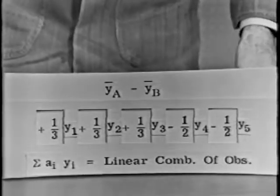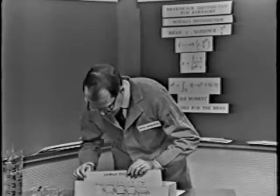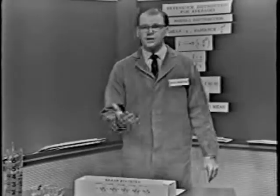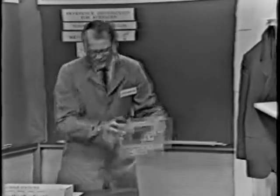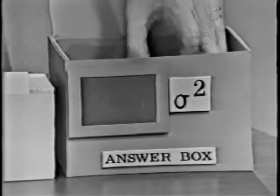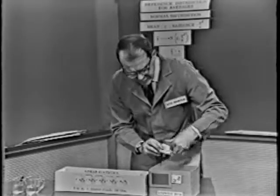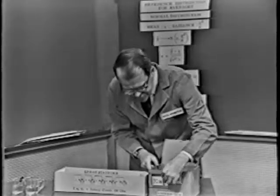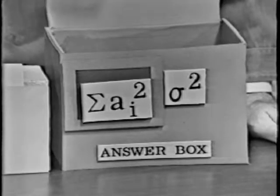Now for the $64 question: what is the variance of a linear statistic? If I have a linear combination of the observations, what's its variance? I have a little answer box up here — this isn't supposed to be black magic, but I do happen to have the answers. The variance of a statistic is always some constant times sigma squared, where sigma squared is the variance of the observations. The variance of a linear combination of the observations, given that the errors are independent of one another, is the sum of the ai squares. In other words, take the coefficients, square them, and sum them up.